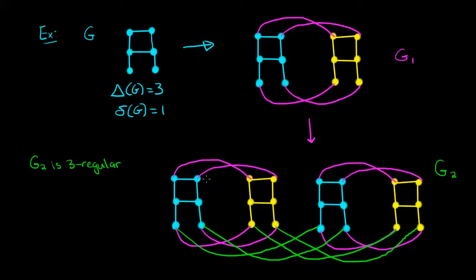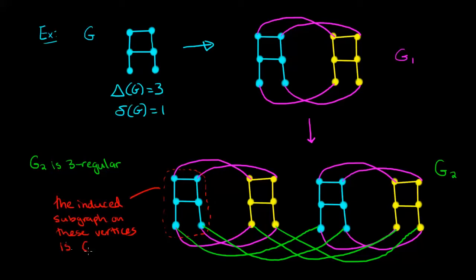We can look at the set of vertices highlighted in red to realize that the induced subgraph on these vertices is the graph g. So what the theorem tells us is that given any graph, we can look at its maximum degree and there will exist a regular graph where every vertex has that degree, and our graph is an induced subgraph of this regular graph.